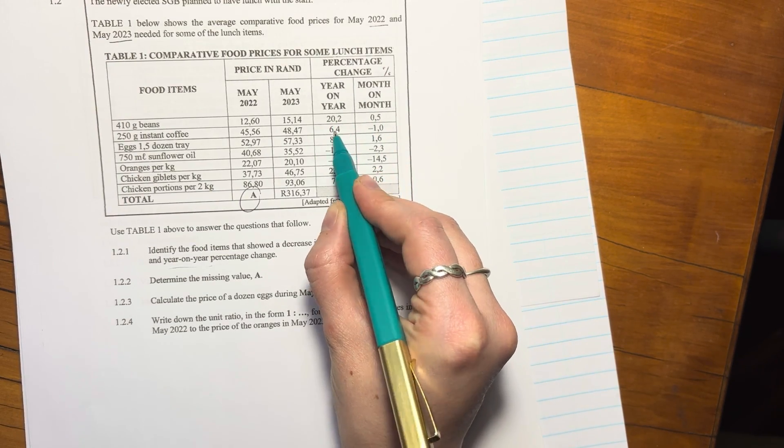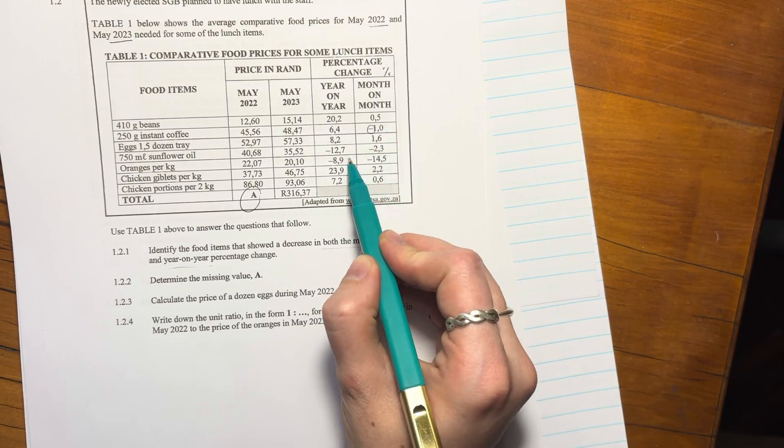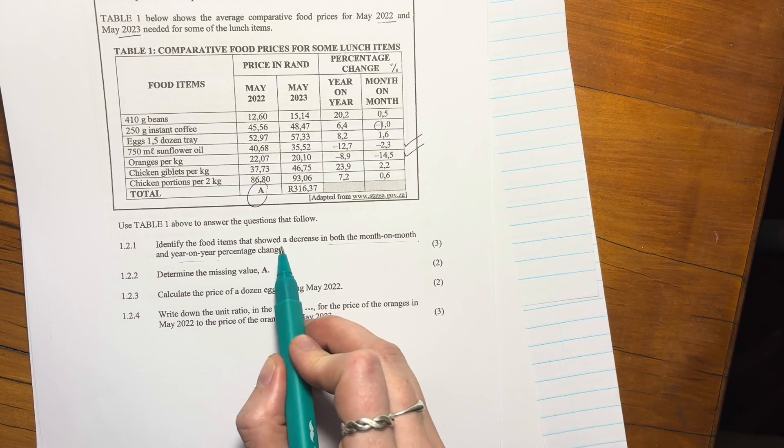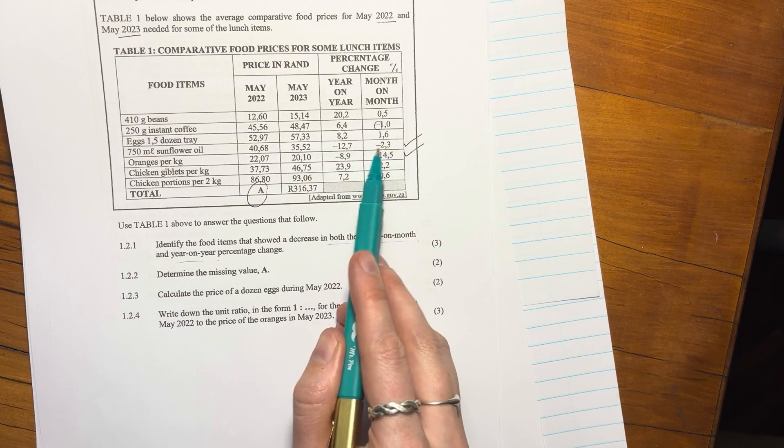1.2.1, identify the food items that showed a decrease in both the month to month and year to year percentages. So let's look here. There it goes up, it goes up, there it goes up, it goes down. That negative shows it's a down. Those are both positive. So here's both negatives, there's both negatives, because that's what it said.